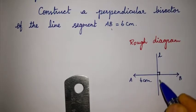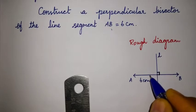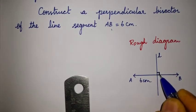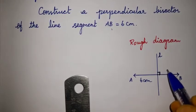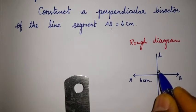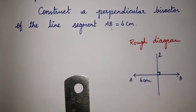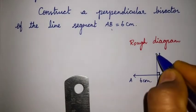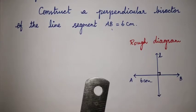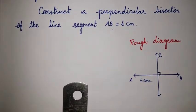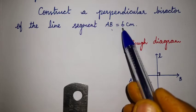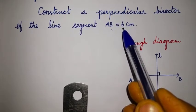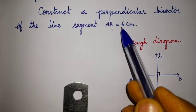The perpendicular bisector is at 90 degrees through the midpoint. A rough diagram is for reference; the original diagram requires exact measurements. For the original diagram, we need a line segment of exactly 6 cm. The midpoint divides it as 3 cm plus 3 cm.